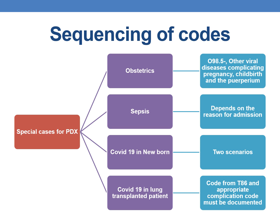Coming to the next guideline — sequencing of codes. There are certain specified conditions which often take the PDX, such as obstetrics, sepsis, COVID-19 infection in a newborn, and COVID-19 in a lung transplant patient. In those special cases, though the patient has COVID-19 infection and that is the reason for the encounter, some other code must be given as PDX. For example, in obstetric cases, O98.5 — other viral diseases complicating pregnancy, childbirth, and puerperium — must be used as PDX, followed by COVID-19 infection.